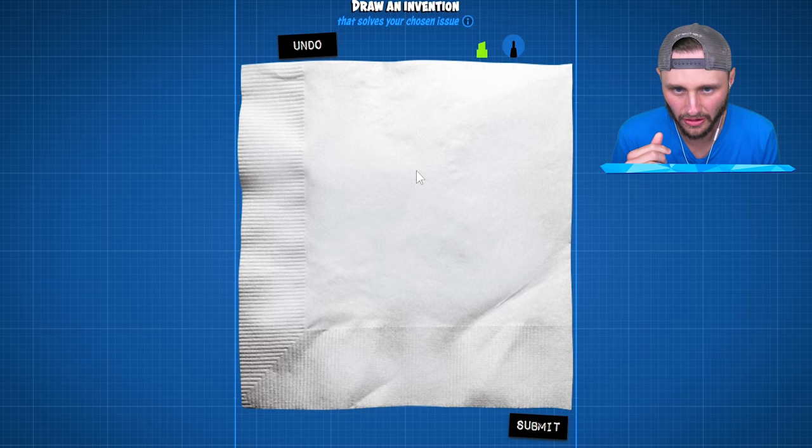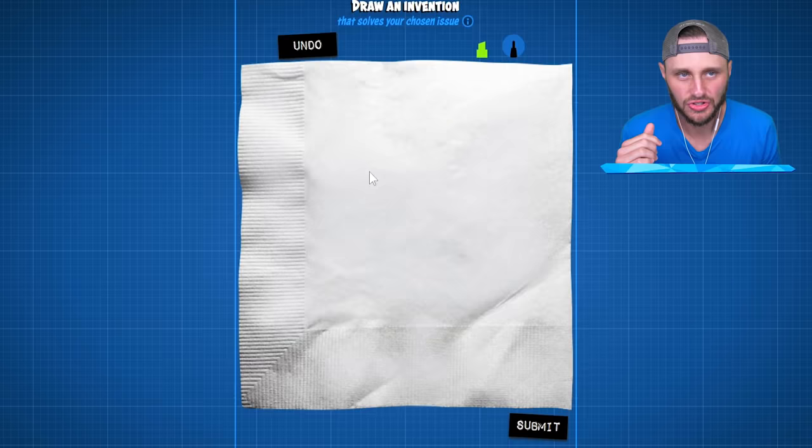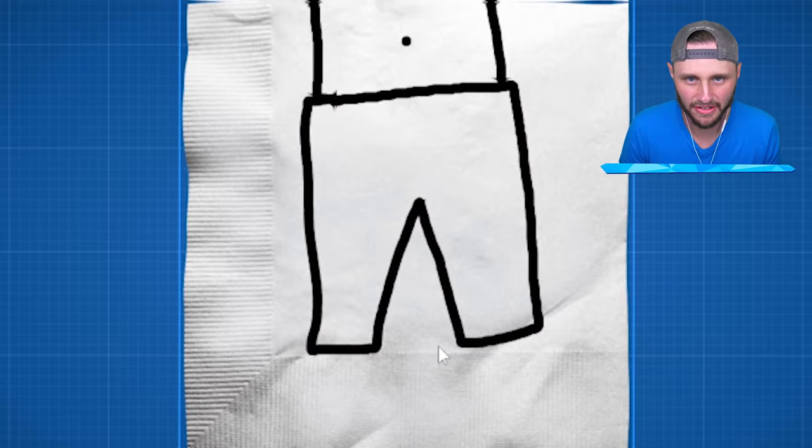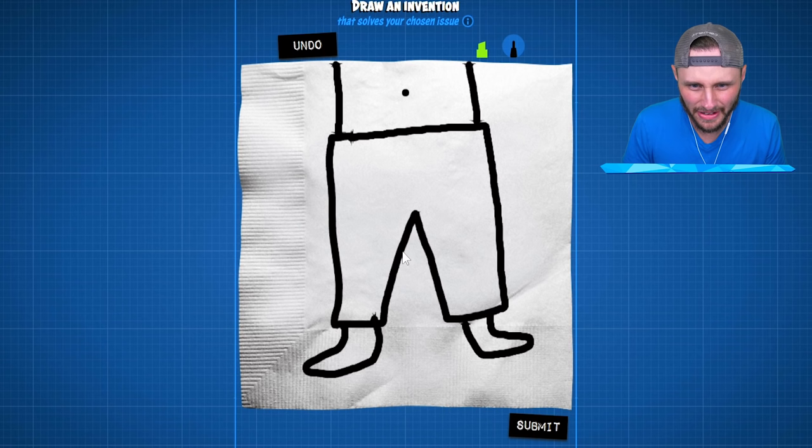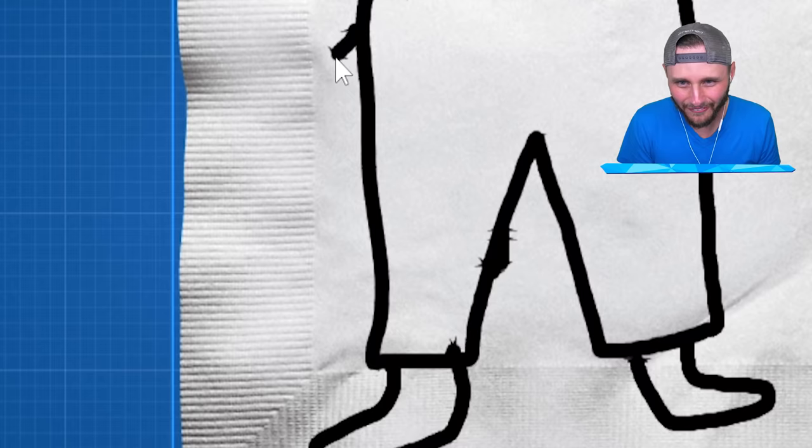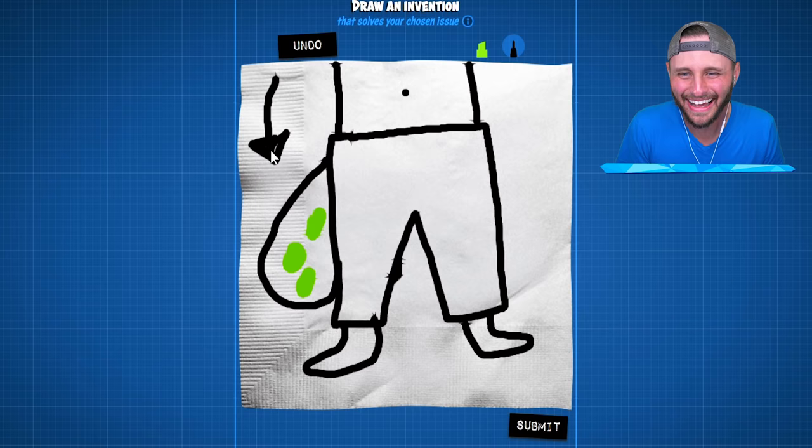I can also use highlights. I gotta hurry. Okay, draw my invention. So there's a real risk I might poop my pants. So here's what I'm gonna do. You got the pants. There you go. Then you got the dude, you know, the guy going up there. You got a little belly button. Then you got his feet down here. I got his feet down here. There's the pants. Now under here, we're gonna have... a bag? No, I'm running out of time. We're gonna do a poop bag. There we go. And that catches all the little turds. And there you go. There's the poop bag.